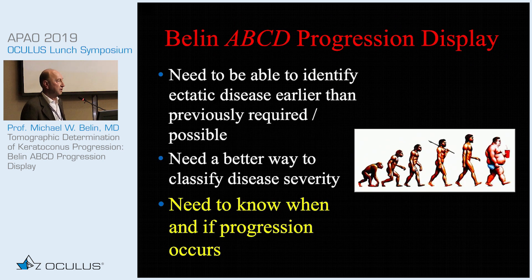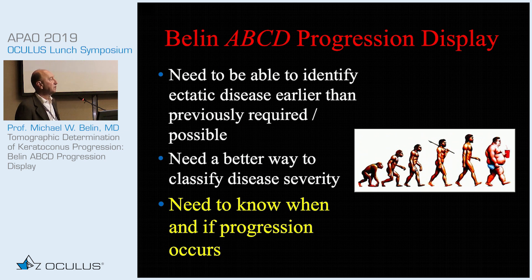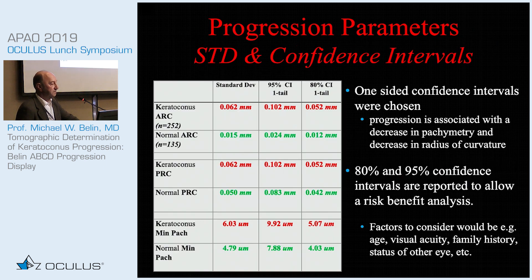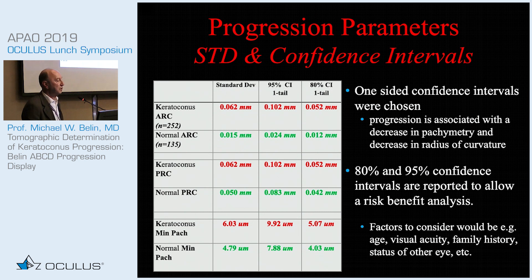The real goal of the classification was not just staging, but to utilize it to determine when and if true progression occurs, early enough to prevent the loss of vision. We needed to determine not only ectatic disease earlier than using Amsler-Krumeich, but when and if true change occurred. So we studied two populations — a normal population and a keratoconic population — to determine the noise levels of those measurements, since early disease in a young patient more closely mimics a normal population, while advanced keratoconus has inherently more noise.